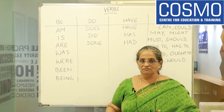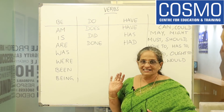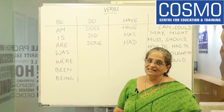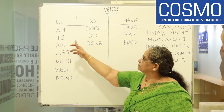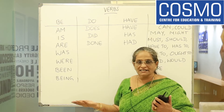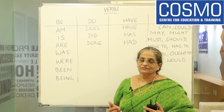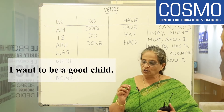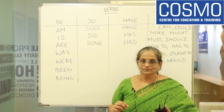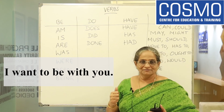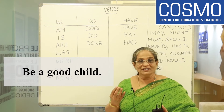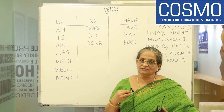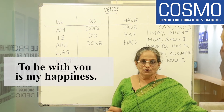Let's say a sentence. We cannot avoid these. Any sentence you take, there will be one of these. Let's look at BE. 'I want to be with you.' 'Be a good child.' So, BE is used in infinitive form and imperative form. 'To be with you is my happiness.'